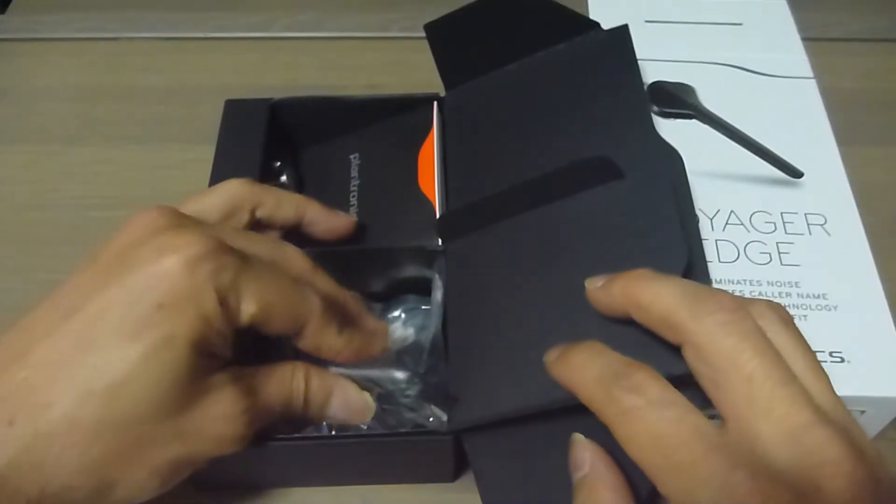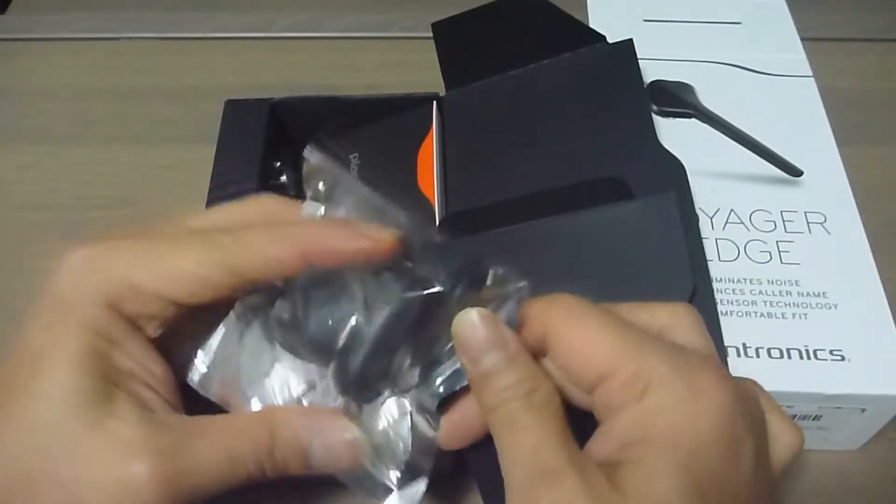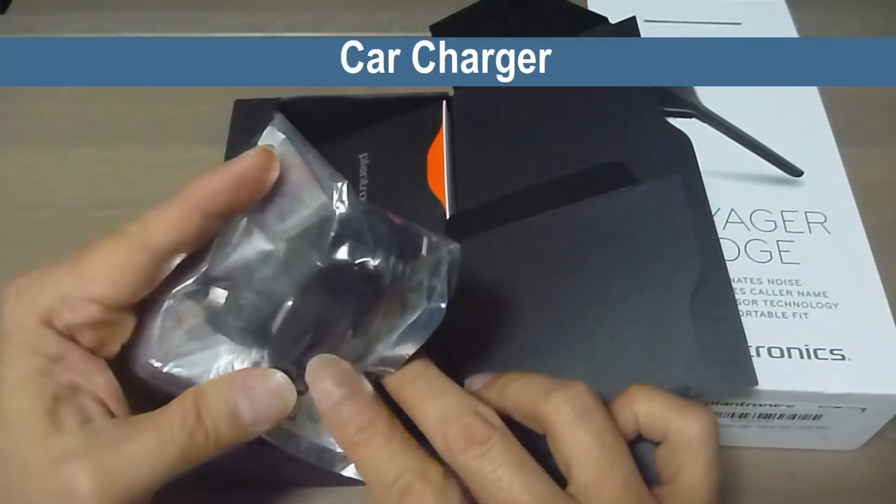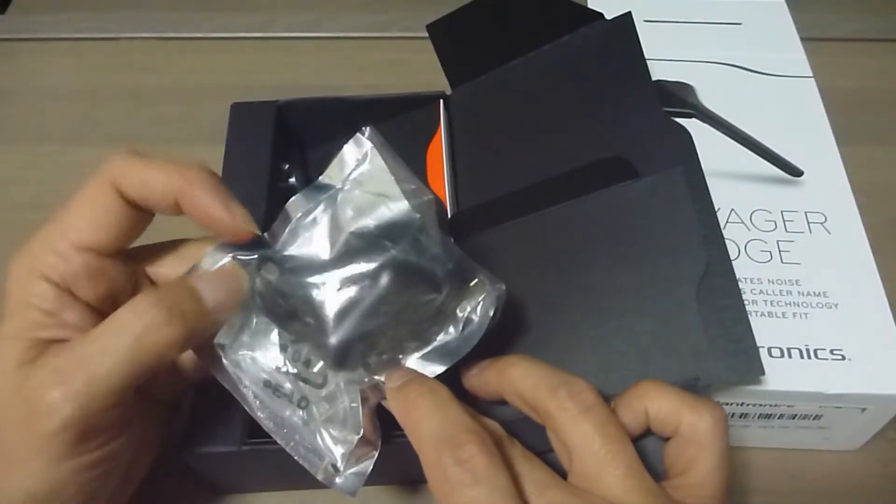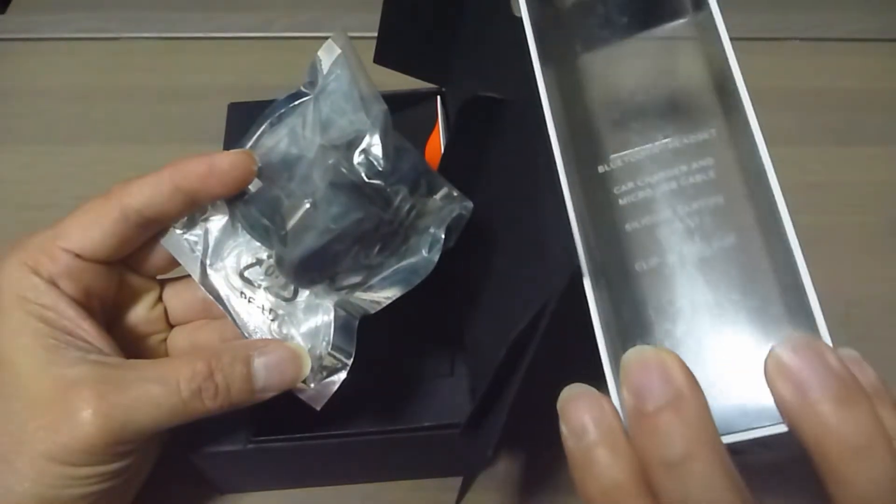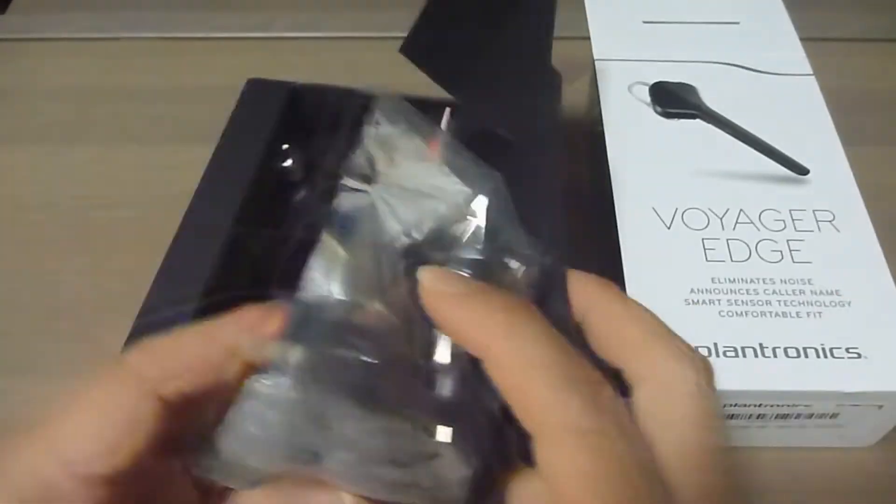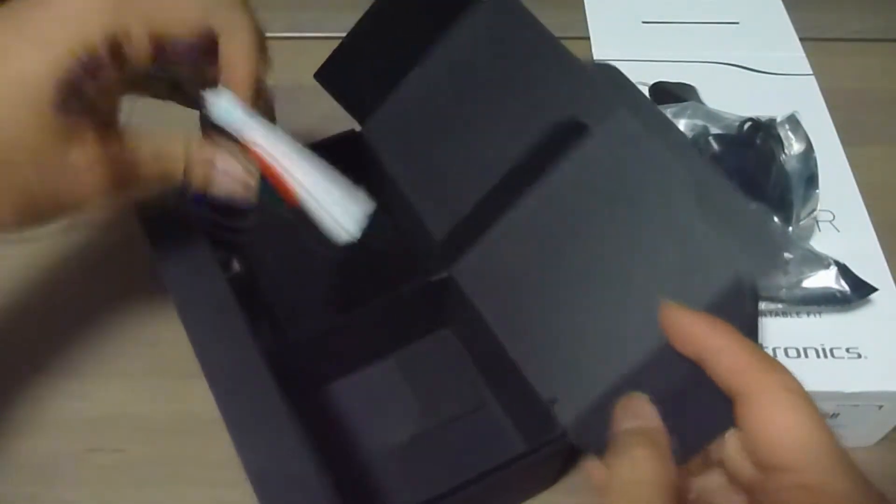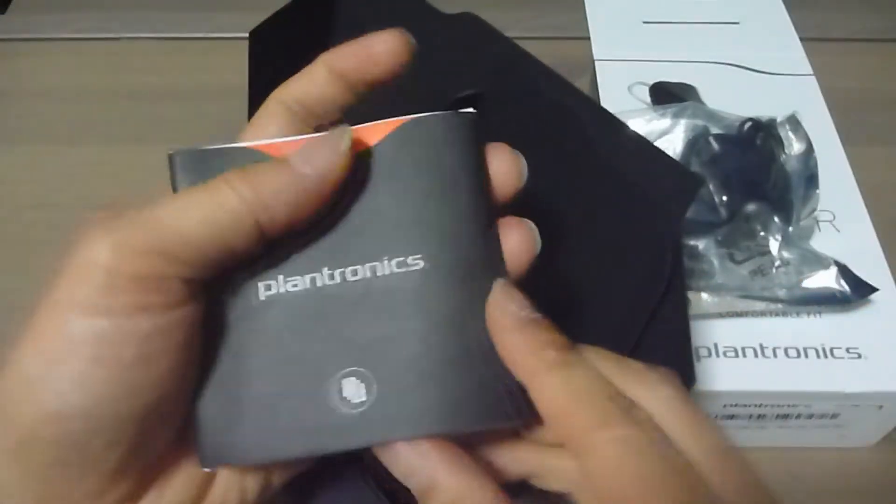So in the box itself, we have got the car charger, the USB cable as well as some earbuds. And of course we have got some user manual here.